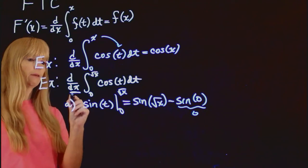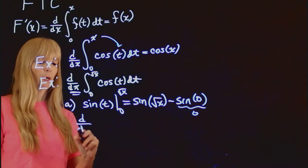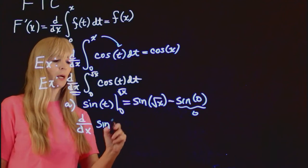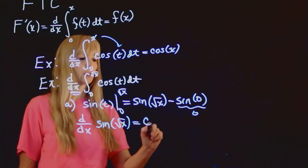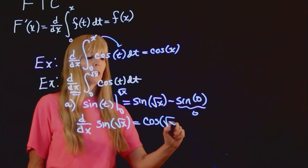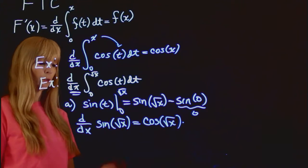Now I differentiate the results. So I have the derivative of sine square root of x. Well, the derivative of sine is cosine, and then don't forget the chain rule.